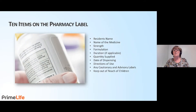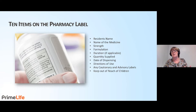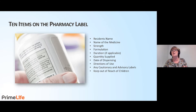There are 10 items on a pharmacy label. First, the resident's name. Second, the name of the medication — remember, medications can often have two names: a generic name, which is the actual name of the medication, and a brand name given by the manufacturer. A good example is ibuprofen tablets as the generic name; the brand name is Nurofen.